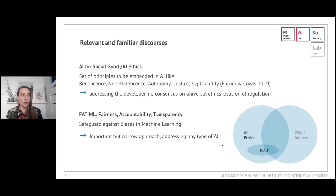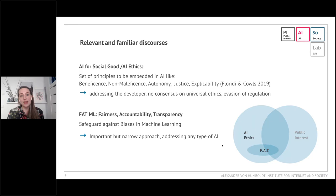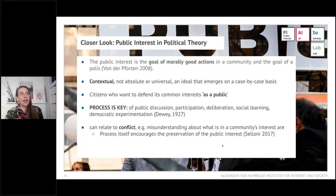There is also the FAT machine learning approach — Fairness, Accountability, and Transparency — which we believe is very important as a safeguard against biases in machine learning. We see it as part of the broader AI ethics approach. However, it is also too narrow for us, because we think some other values are really important when it comes to public interest, as we will explain along the line of our argument today.